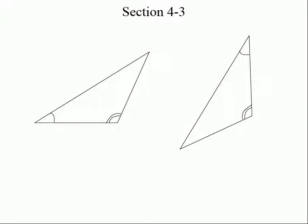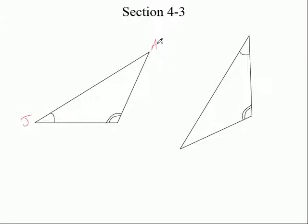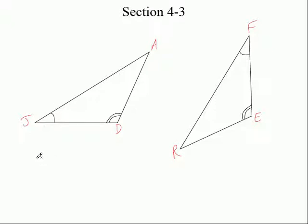Let's name this one something besides ABC. We'll go JAD. So let's come over here and mark the second triangle the same exact way. We'll use RFE. So if we call this triangle JAD, we want to name the other triangle in the corresponding order.